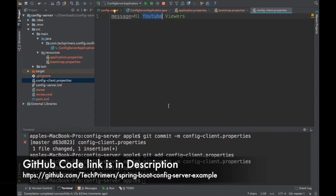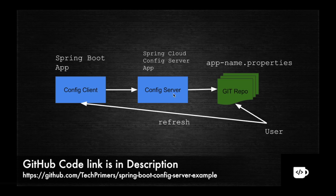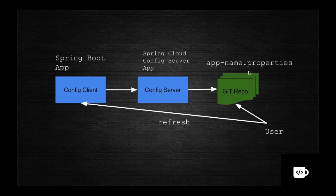Now refreshing the browser, the message updates to 'Hi YouTube Viewers'. That's the full flow: I changed the config-client.properties in the local Git repository, committed it, sent a POST to /actuator/refresh on the client, and the new value was reflected — no redeployment, no restart. The config server fetches from Git only once on startup; subsequent updates require a refresh trigger.